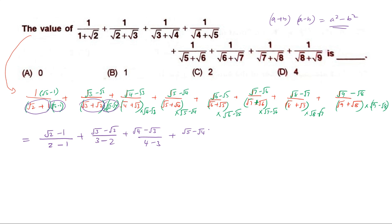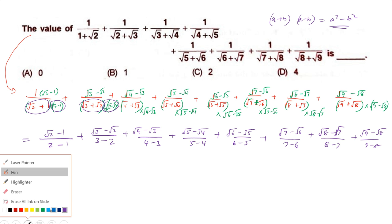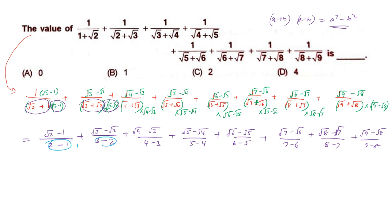Similarly, the next term is (√5−√4)/(5−4), then (√6−√5)/(6−5) — wait, (√7−√6)/(7−6), then (√8−√7)/(8−7), and the last term is (√9−√8)/(9−8). Now, each and every denominator equals 1, so all denominator values are 1.